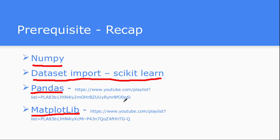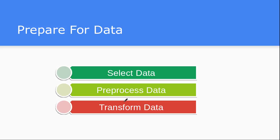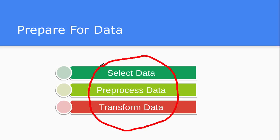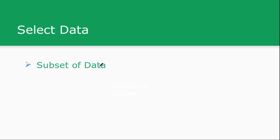So those are all the prerequisites. Now let's see — we have imported the data, so what can we do further? There are three essential tasks we need to perform based on our requirement and what kind of problem we want to solve: first, we need to select the data; then we need to preprocess the data; and then we need to transform the data. These are the three essential steps required before fitting data inside a machine learning algorithm.